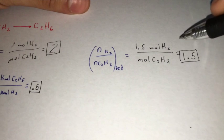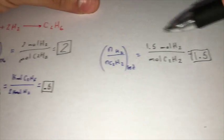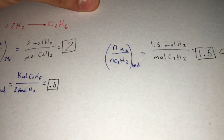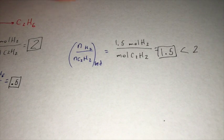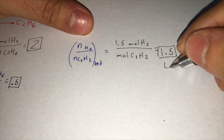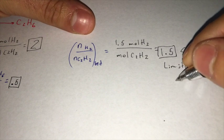And since 1.5 is smaller than the stoichiometric ratio of two, since 1.5 is smaller than two, our limiting reactant would be H2.